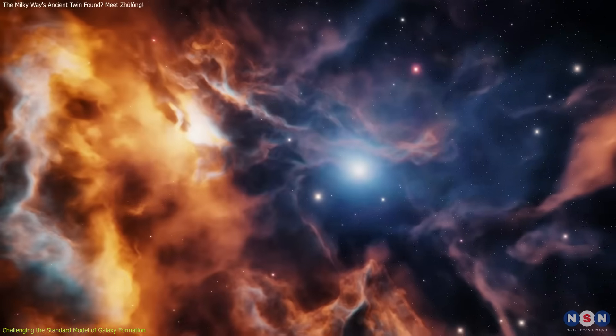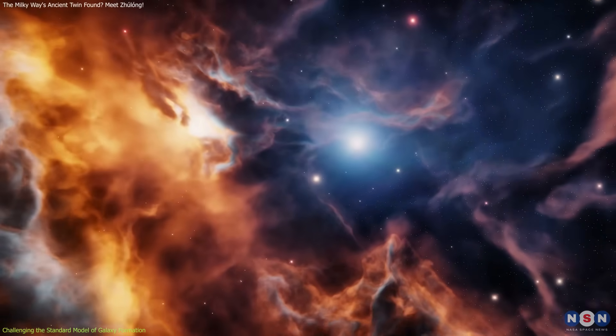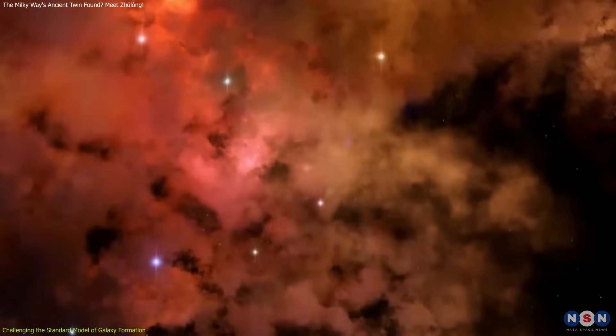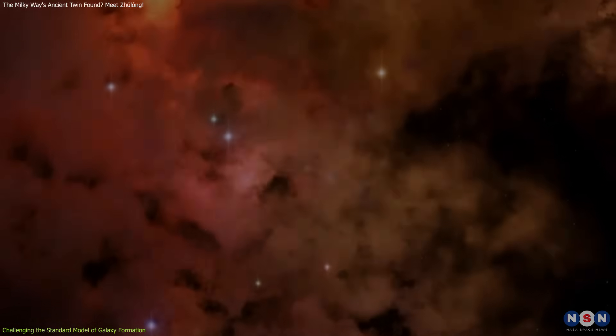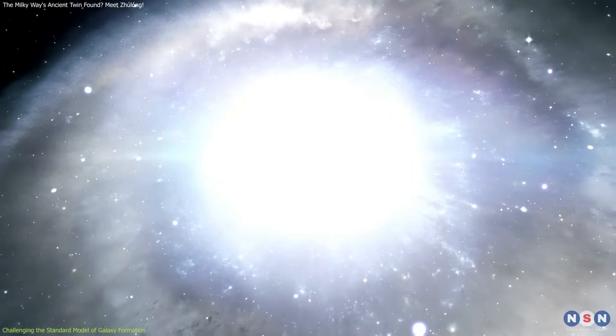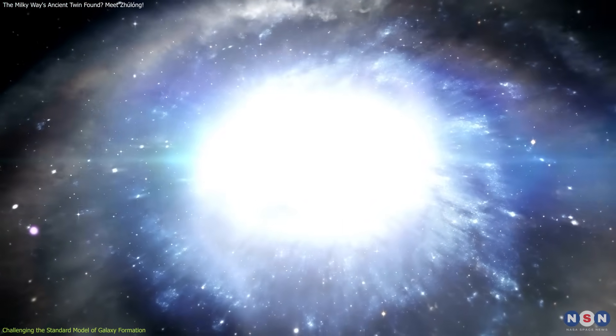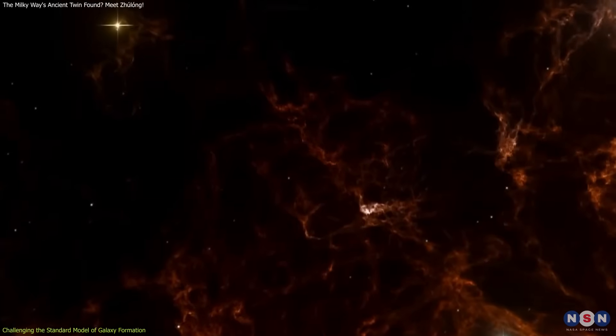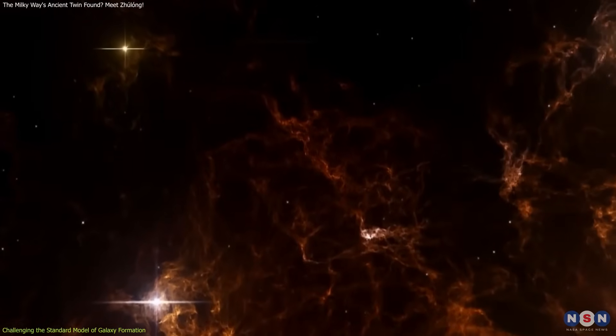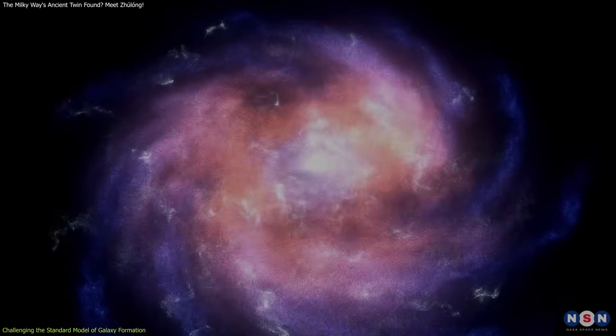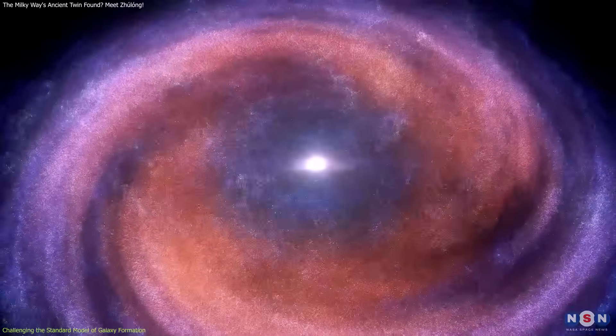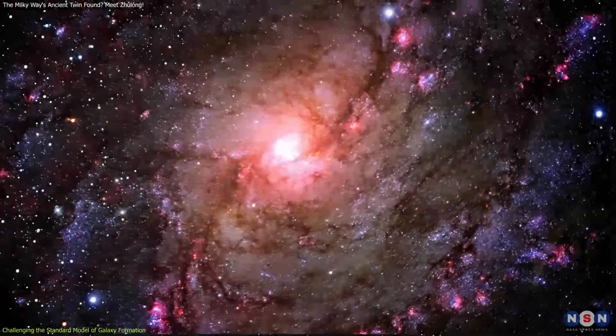There's another possibility too. The gas in the early universe might have been cooler, or turned into stars more easily, making it quicker to build up huge, structured galaxies. Cooler gas tends to clump together faster, giving birth to stars and forming dense, organized systems like spiral galaxies.